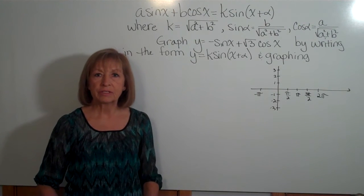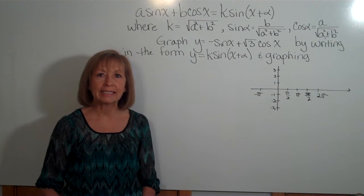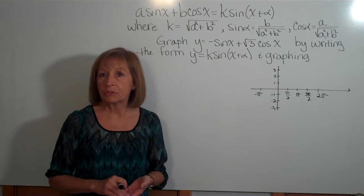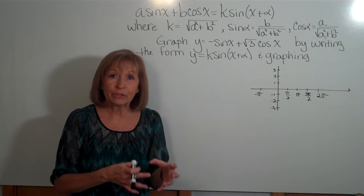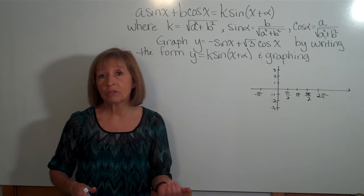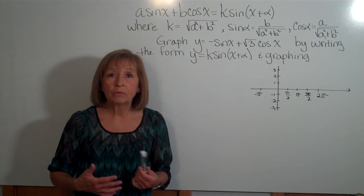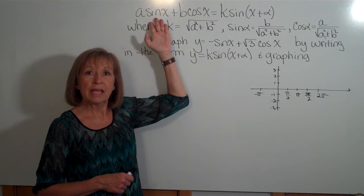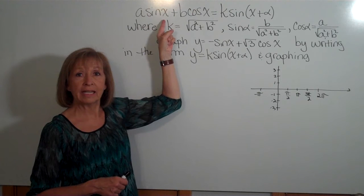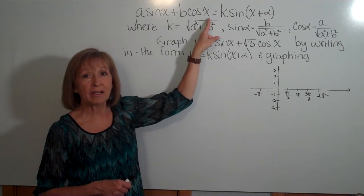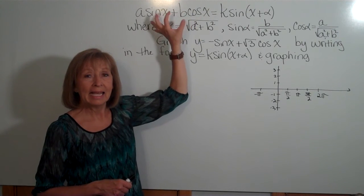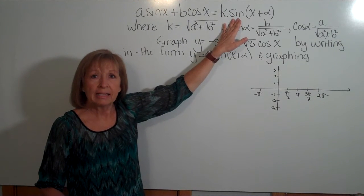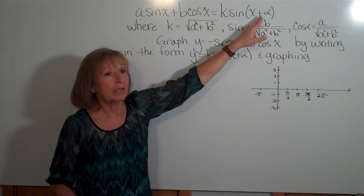There are some situations where we have an addition or subtraction of a sine and cosine function acting on the same angle, and it's harder to work with in that form. If we could get it where it was just an amplitude change and a phase shift on one of those trig functions and still mean the same thing, it would be much easier to work with, whether we're solving equations or graphing functions. In this video, we're going to talk about how to take an expression in the form of a numerical multiplication of sine of an angle plus a numerical multiplication of cosine of that same angle, and write that as an equivalent expression that is just a multiple of sine of that angle with a phase shift.